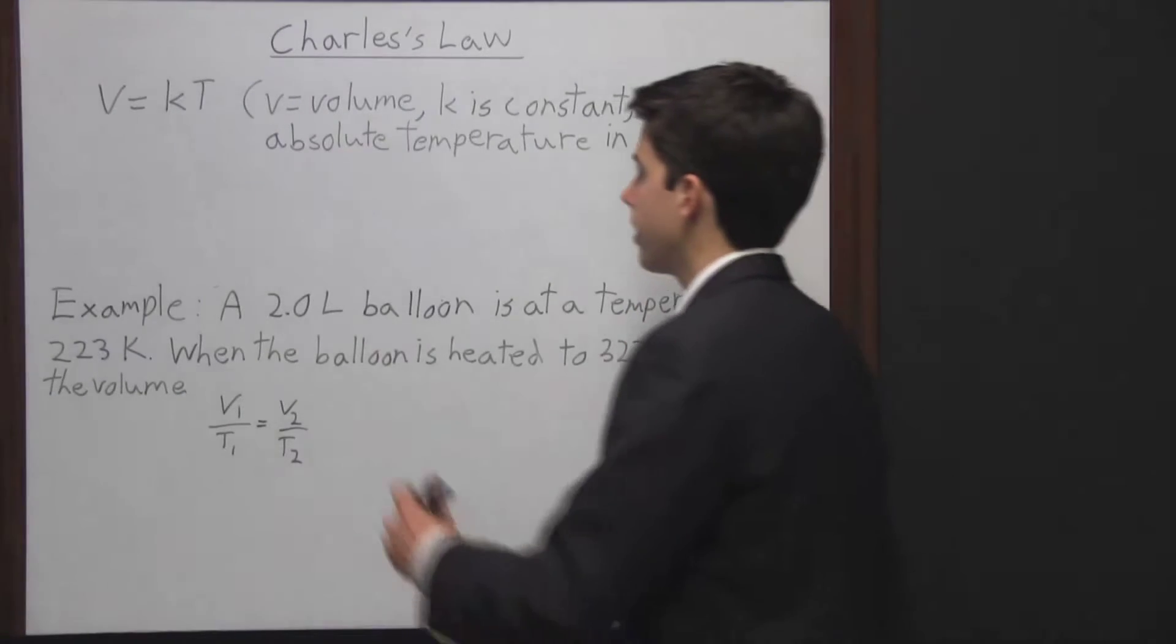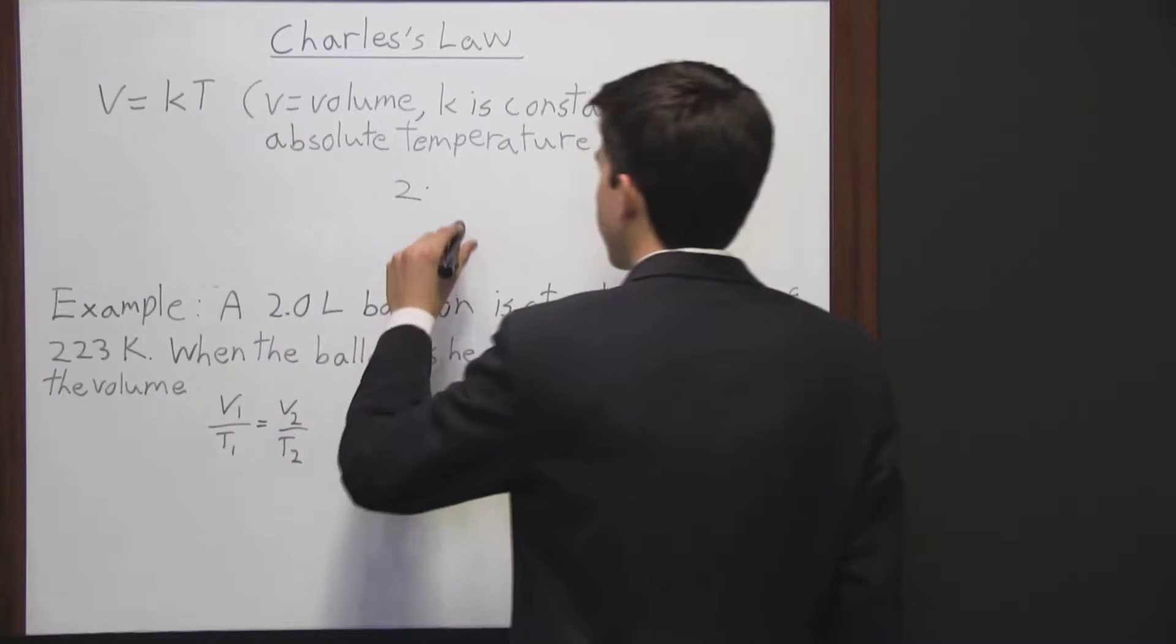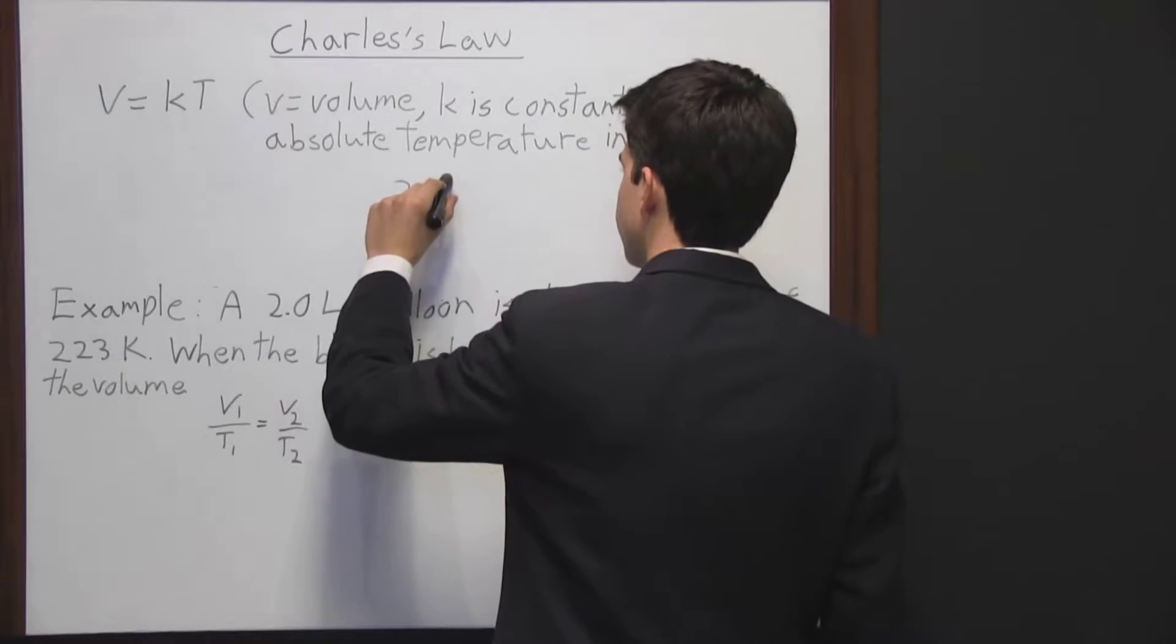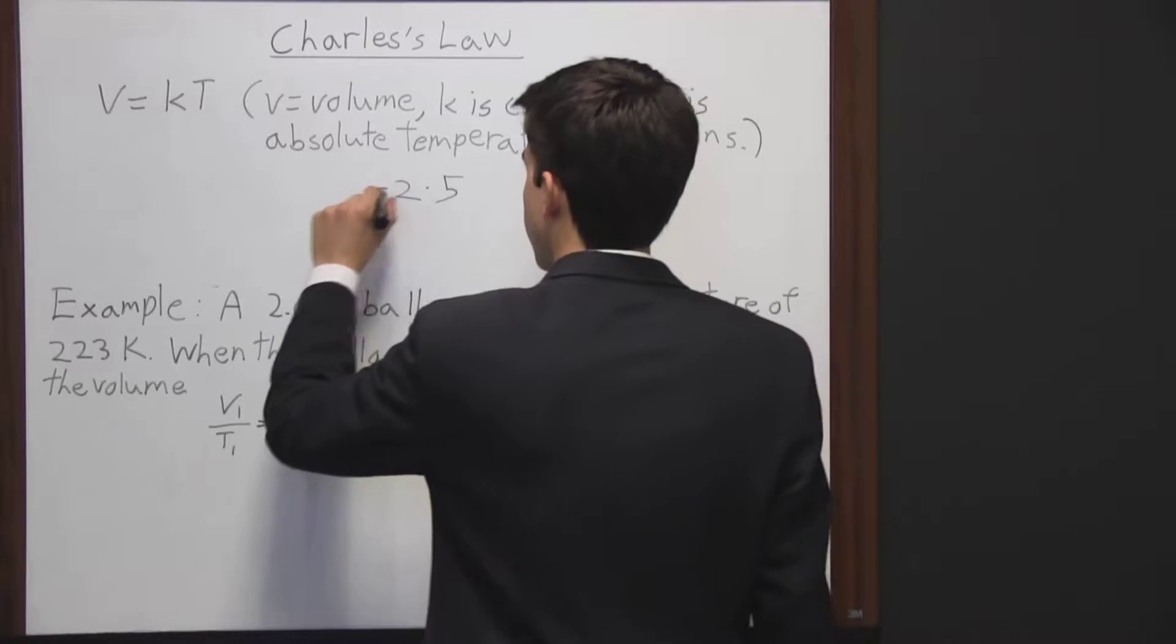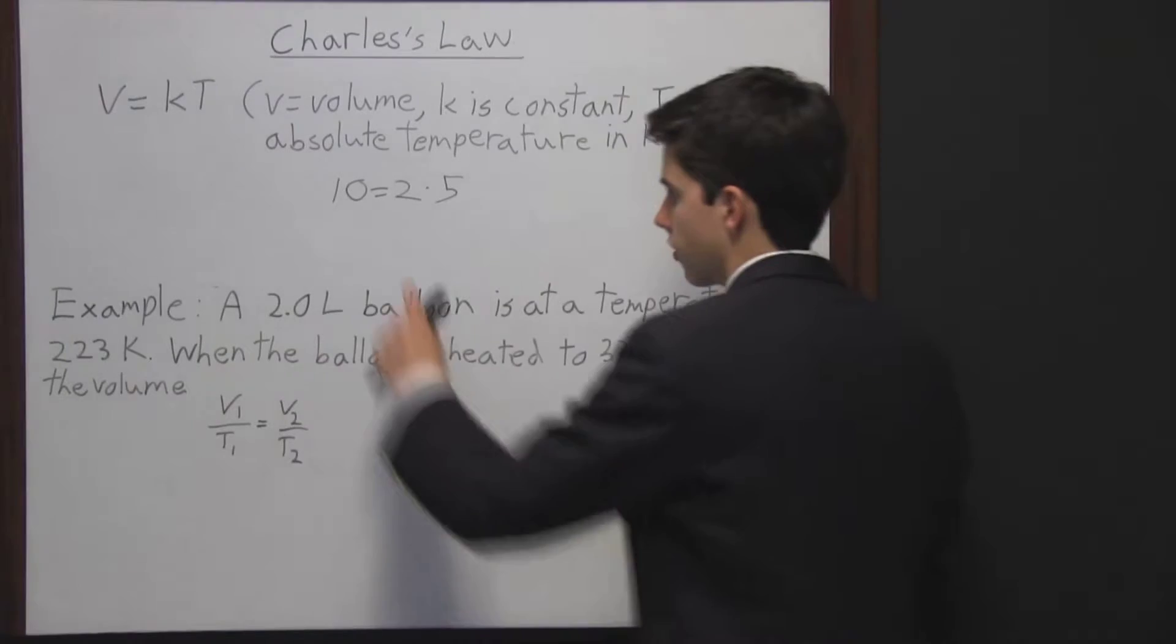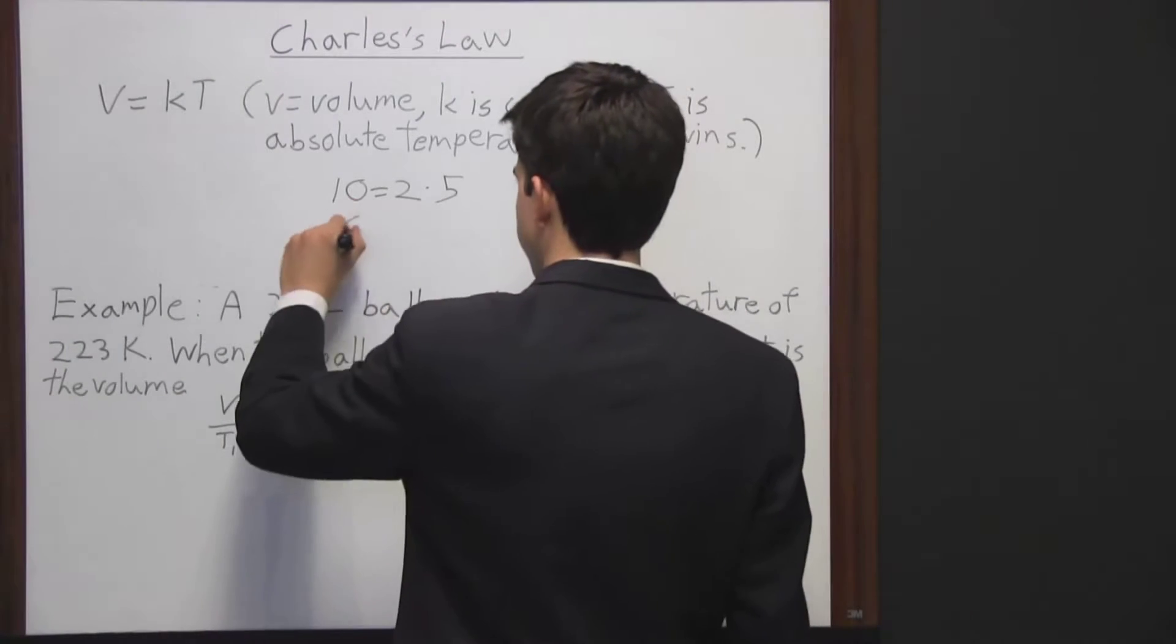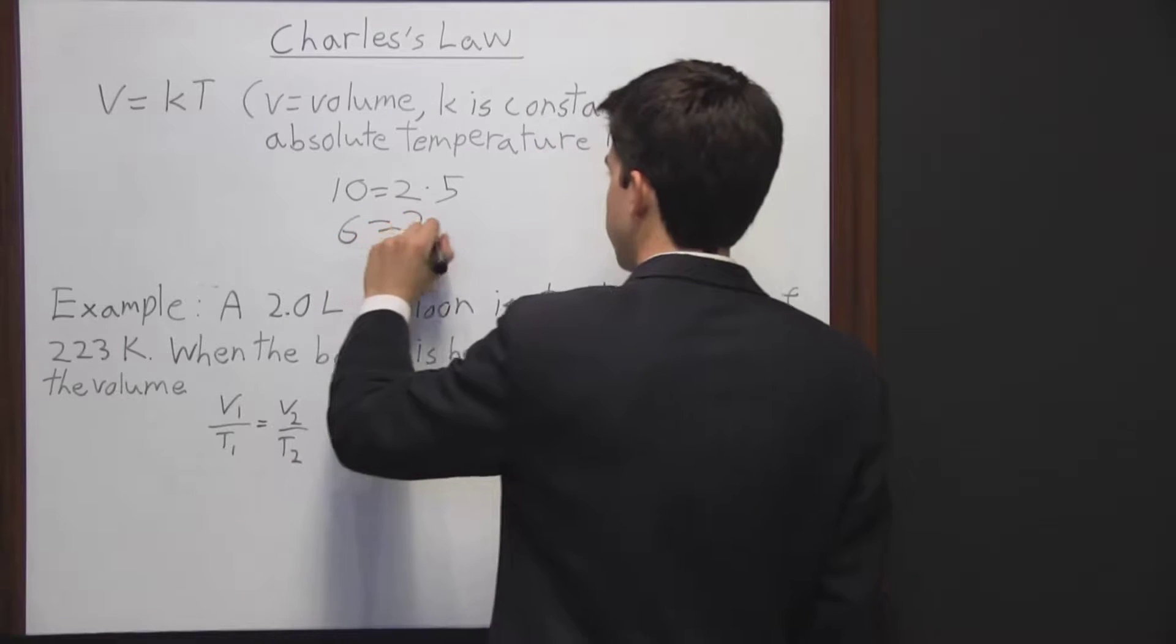Say the constant was 2, the temperature is 5, and the volume is 10. That equation makes sense. So this is the volume, this is the constant, this is the temperature. Now say the volume is 6. Well, the constant is going to have to be the same because it's always the same.